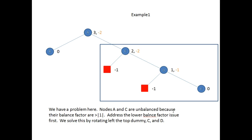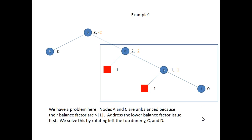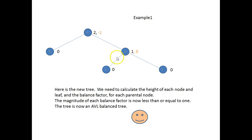We start as far down as we can, so we start at C. What we're going to do is rotate to the left about node C, so C will go down, D will come up, and E will come up. Now C and E both have a height of zero; the difference between those heights is zero. B has a height of zero, D has a height of one; the difference zero minus one equals minus one. So the tree is now balanced.